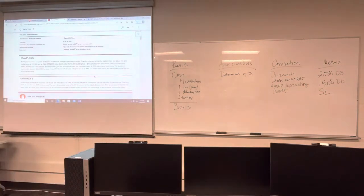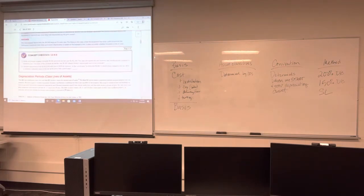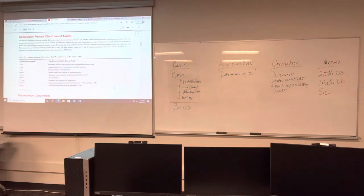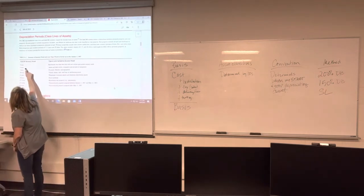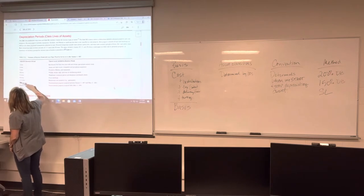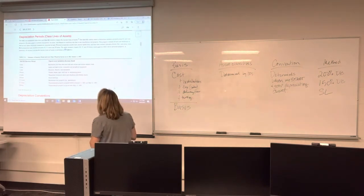Questions on basis? This is our starting point — we need to know what we start with. The second component is asset class lives. As I said, the IRS decides how long you're going to depreciate an item. The most common that we use in this class are five, seven, twenty-seven and a half, and thirty-nine years. This is just a partial list — you can get more detailed information on the IRS website about what types of assets are depreciated over what period.